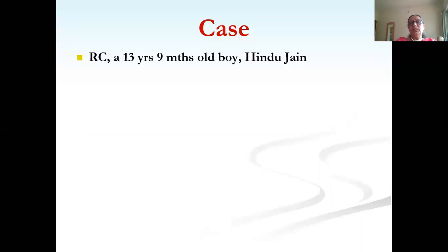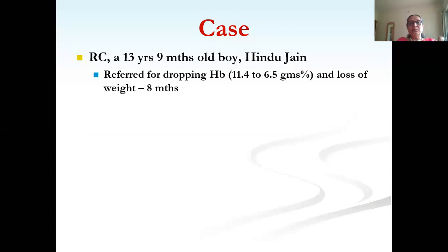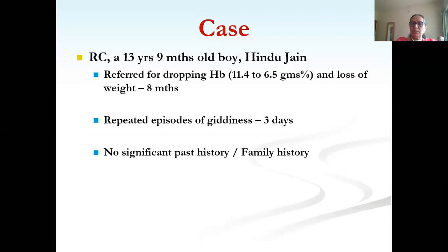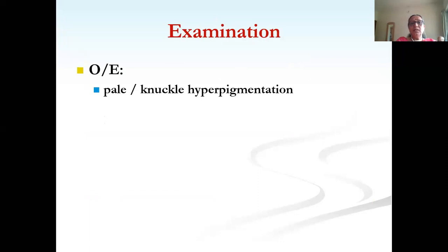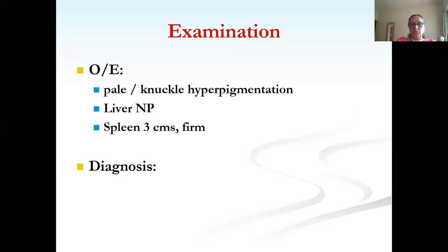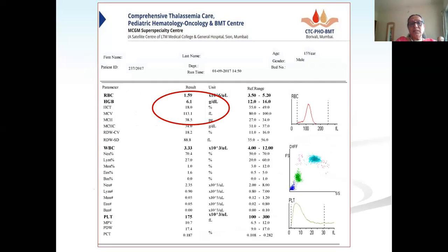Case 1: A 13-year-old boy from a Jain community — strict vegetarian — referred for hemoglobin dropping from 11.4 to 6.5 g%, with weight loss for eight months and repeated episodes of dizziness for three days. No significant past or family history, no pica or bleeding. On examination: pale, knuckle hyperpigmentation, spleen 3 cm. The diagnosis is nutritional megaloblastic anemia. CBC showed Hb 6.1 with low RBC count, very high MCV of 113.